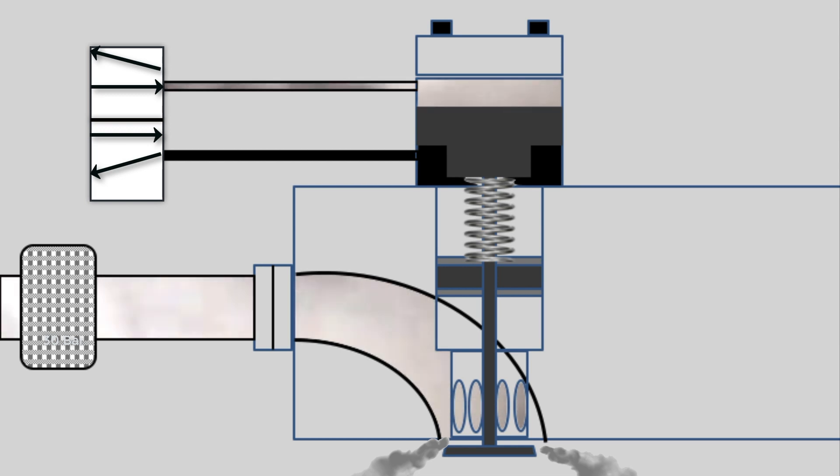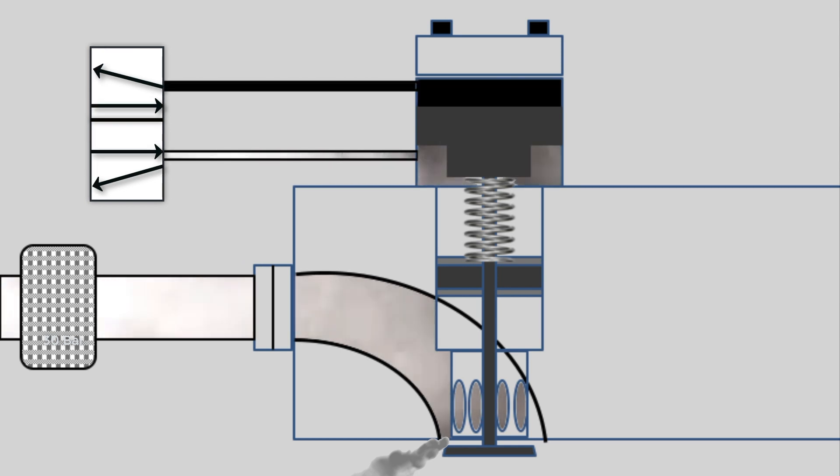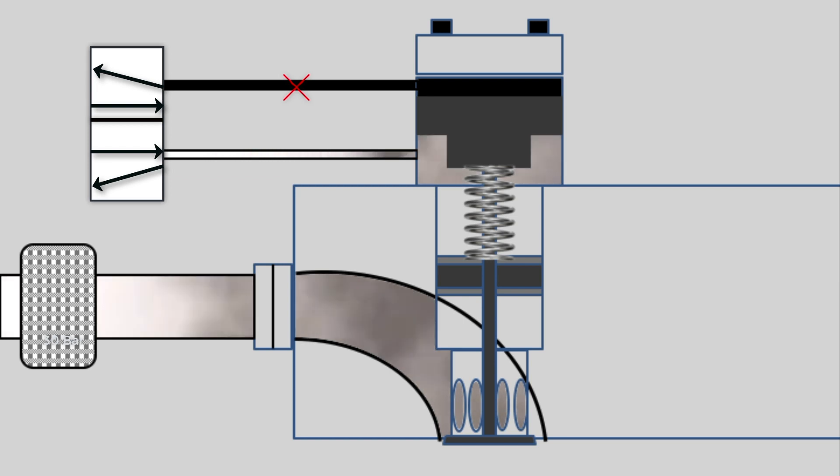To close the valve, the air is supplied to the bottom part, venting the upper portion of the operating piston. This also helps in providing a cushioning effect to the valve as the air on top dampens the closing.